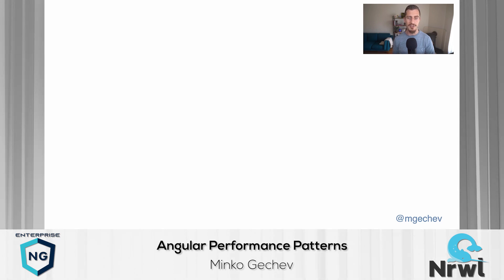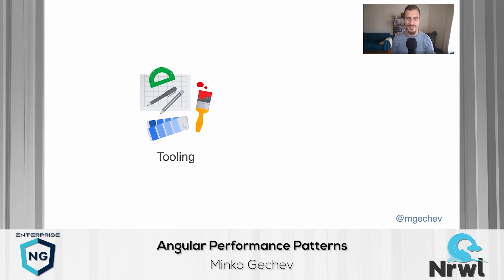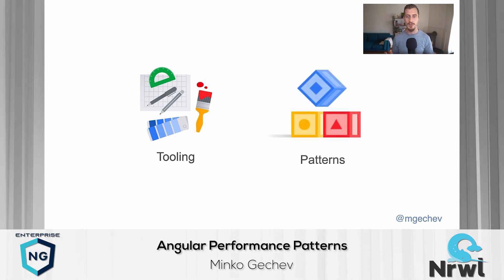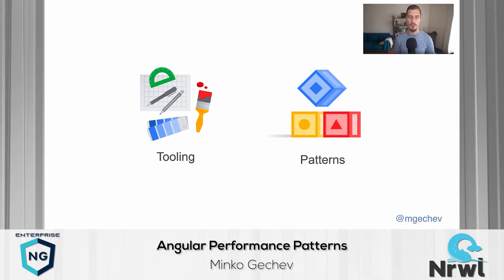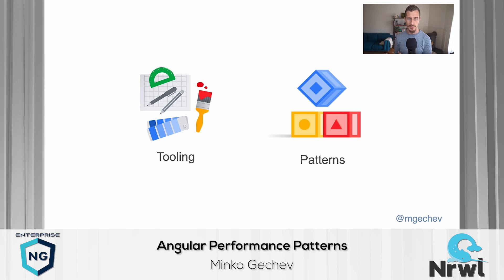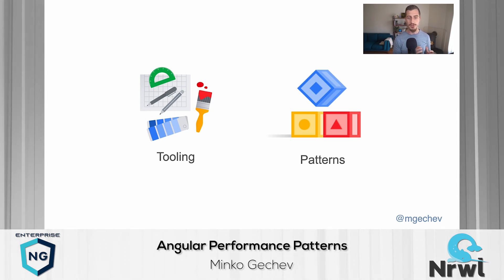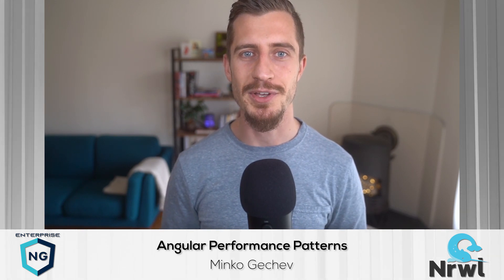That's pretty much everything I had for you today. We first went through the fundamentals of using Angular DevTools, focusing on the profiler. After that, we explored four patterns that can help you identify and resolve common performance issues: zone pollution, out-of-bounds change detection, recalculation of referentially transparent expressions, and large component trees. Thank you very much for watching this video. See you next time, and happy coding!